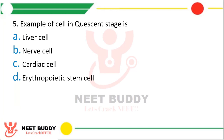Question 5: Example of cells in quiescent (G0) stage is? Option A: Liver cells. Option B: Nerve cells. Option C: Cardiac cells. Option D: Erythropoietic stem cells. The correct answer is Option A, liver cells. Quiescent stage means the cell has escaped the cell cycle and is just existing without dividing. Nerve and cardiac cells are permanent — once they escape the cell cycle, they never come back. Erythropoietic stem cells continue to divide. However, liver cells exist in the quiescent stage, and whenever there is a need for division, they re-enter the cell cycle and divide to produce more liver cells.